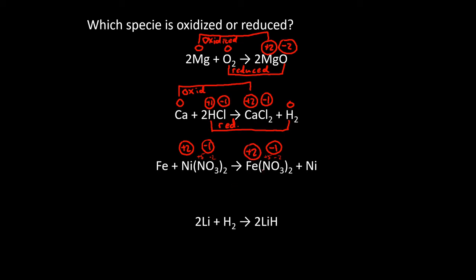If you don't feel comfortable treating the polyatomic ion as a block, feel free to work out the oxidation numbers individually — but this approach will save you time. The only other things are the iron and the nickel on the reactant side, both in their free elemental state — not bonded to anything, not charged, so they are zero. The iron goes from zero to plus two, so it is oxidized. The nickel goes from plus two to zero, so it is reduced.